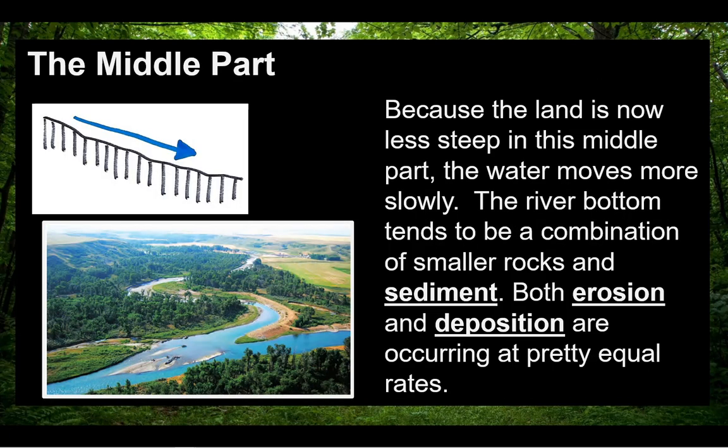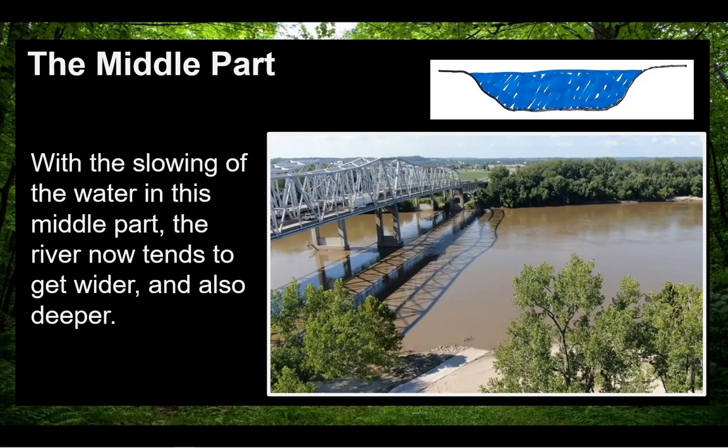Because the land is now less steep in this middle part, the water moves more slowly. The river bottom tends to be a combination of smaller rocks and sediment. Both erosion and deposition are occurring at pretty equal rates. With the slowing of the water in this middle part, the river now tends to get wider and also deeper.